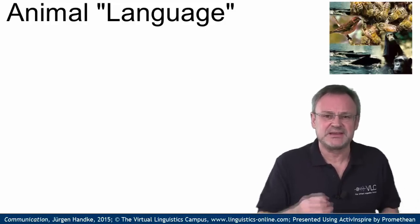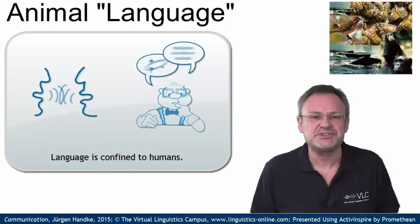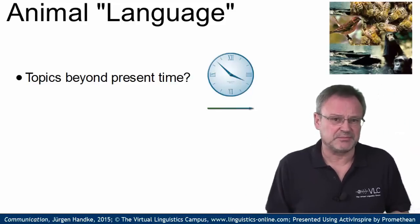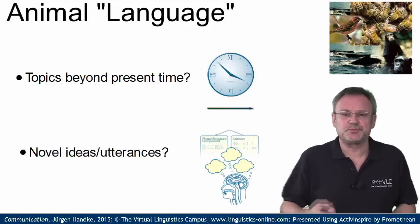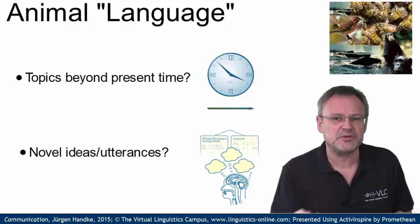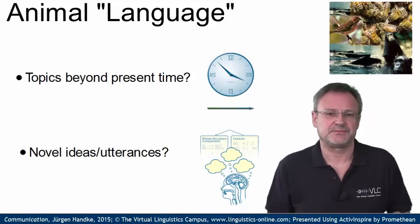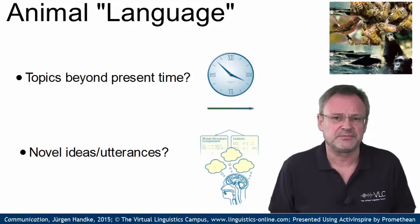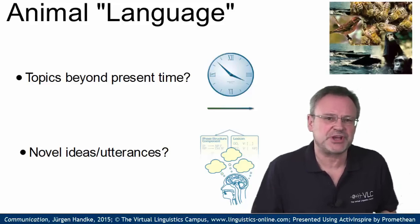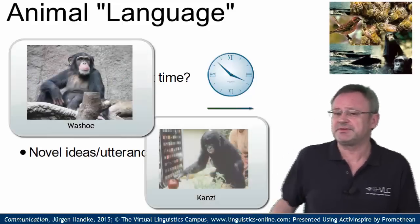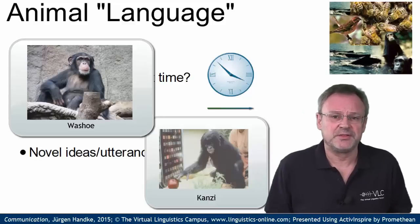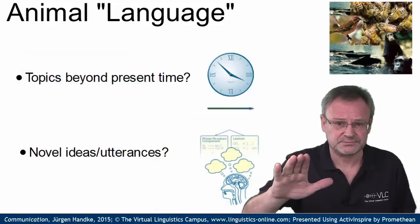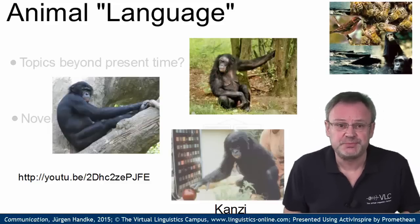Linguists consider language as a distinctively human phenomenon for the following reasons. Only humans can talk about things that are not present in space or time. And second, language enables us to produce and understand any number of messages that have never been heard before and that may contain novel ideas. Animal communication systems, by contrast, are fixed in terms of messages that can be conveyed. Despite some more or less successful attempts to teach animals to use a symbolic version of human language — for example, the chimpanzee Washoe in the 1960s or the well-known Bonobo Kanzi — their communication skills are limited. Speech did never occur, but comprehension, even of human speech, has been demonstrated.